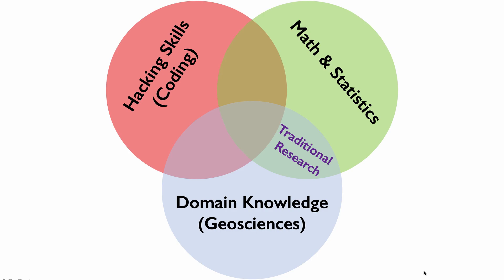This is why geoscience is a science — it's because you can express the relationship between geological processes with math and statistics. So nothing new there. To get to data science and machine learning we need to add coding. Hacking or coding is a skill that is essential for data science, and really at the intersection of math, domain knowledge, and hacking you find data science.